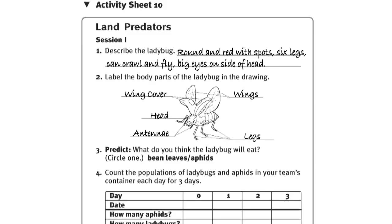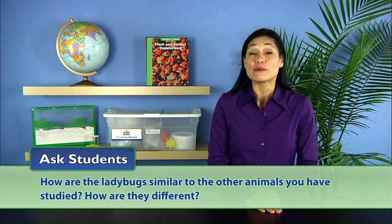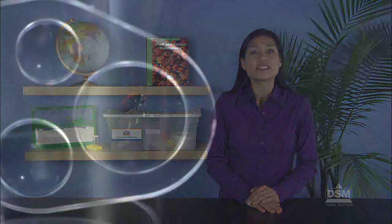Ask students, how are the ladybugs similar to the other animals you have studied? How are they different? Students may say that ladybugs have six legs and three body parts, like the ants, aphids, and fruit flies.